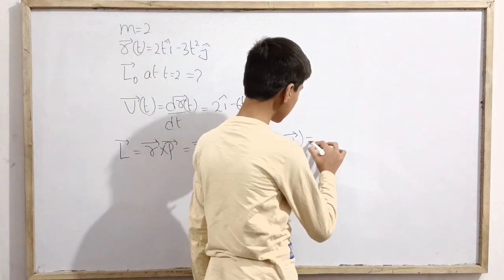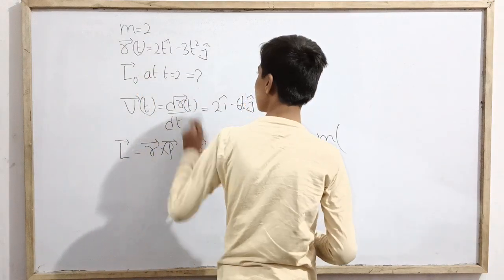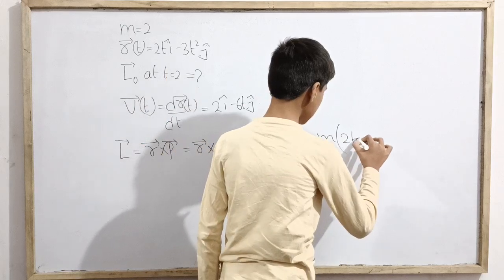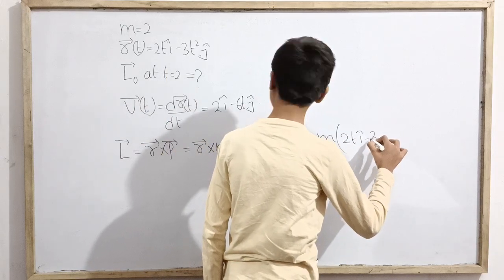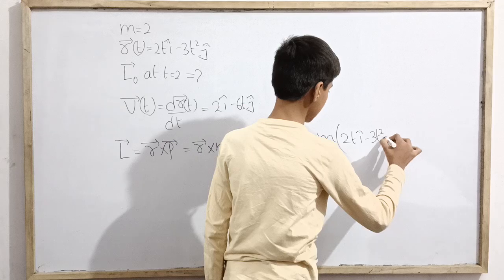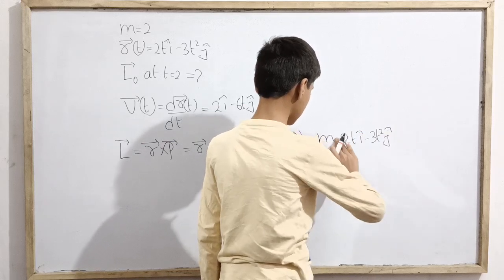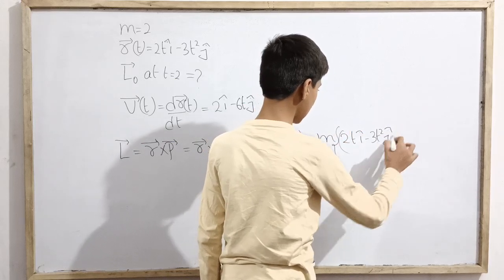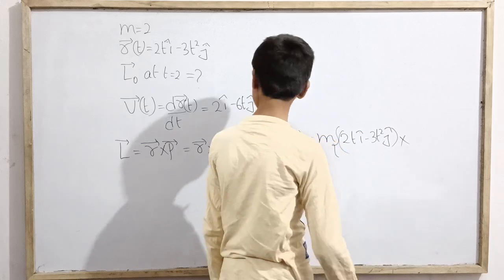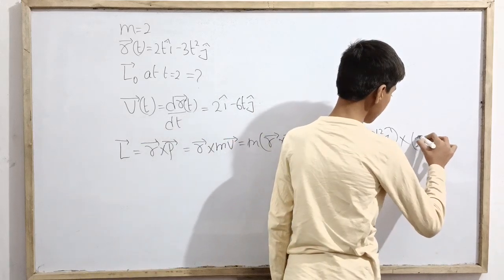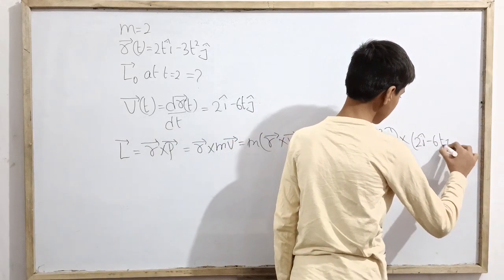We have vector r and vector v. Vector r we know is 2t i cap minus 3t square j cap. So we will be making a curly bracket, cross with 2 i cap minus 6t j cap.